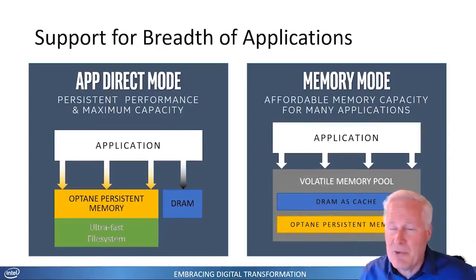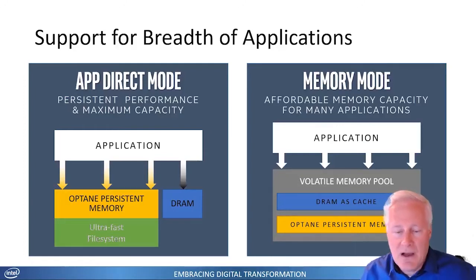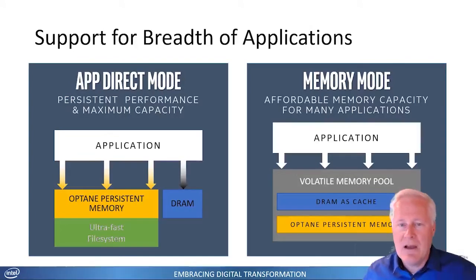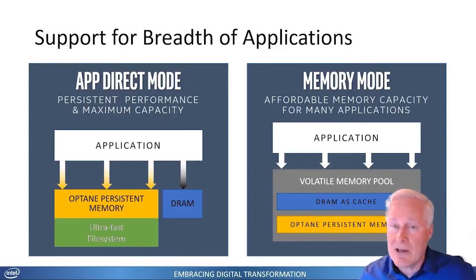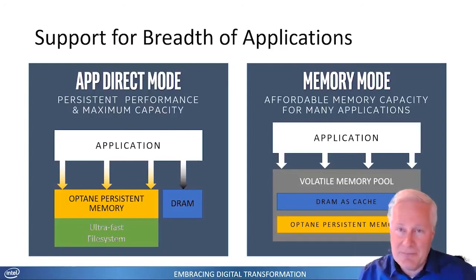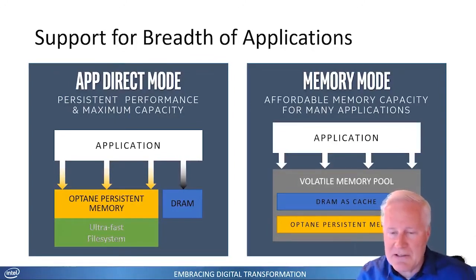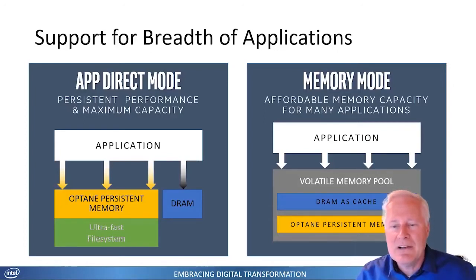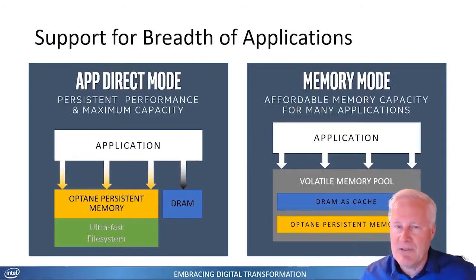Another mode I like to play around with the most is app direct mode. In app direct mode, I can write an application so that it writes directly into persistent memory. This is really cool because I no longer have to take a complex data structure, marshal it, and stream it out onto a file system, which wastes a lot of time. Instead, I can go directly into memory and it's persistent. Another thing I can do in app direct mode is create a non-volatile memory file system that sits right on the memory bus, which is so much faster than the NVMe bus or even the SATA bus.